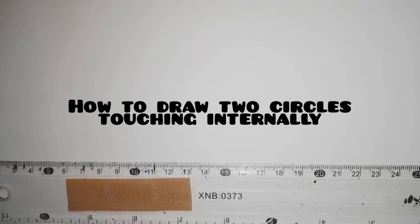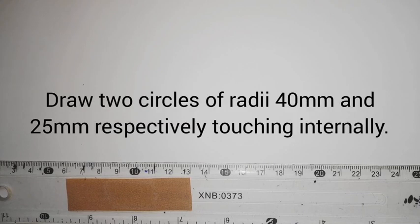Now we are looking at tangency. In this question we are going to handle one example of drawing circles that are going to touch internally. The question reads: draw two circles that are going to touch each other internally. The first circle is of radius 40 millimeters and the second circle is of radius 25 millimeters.